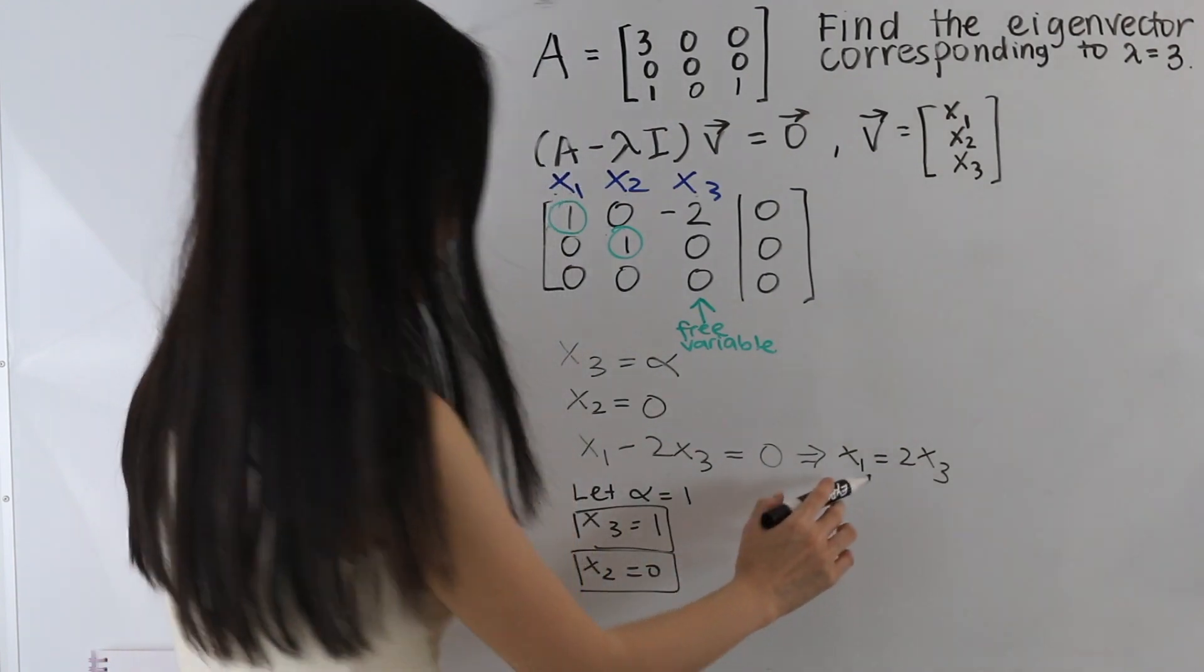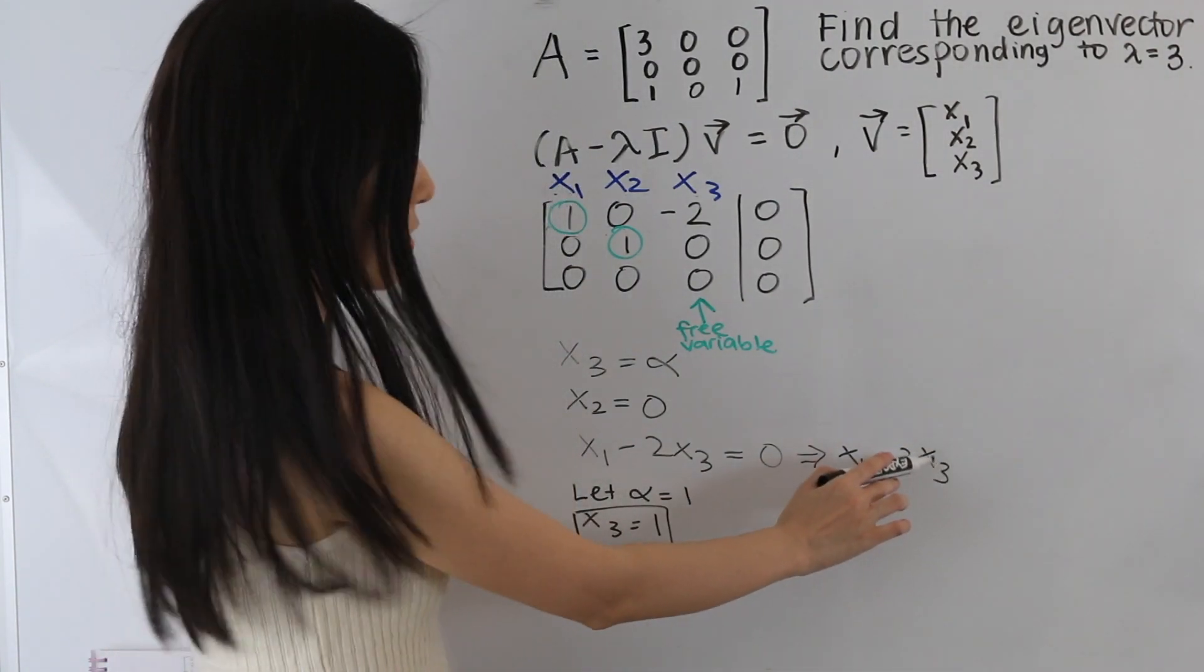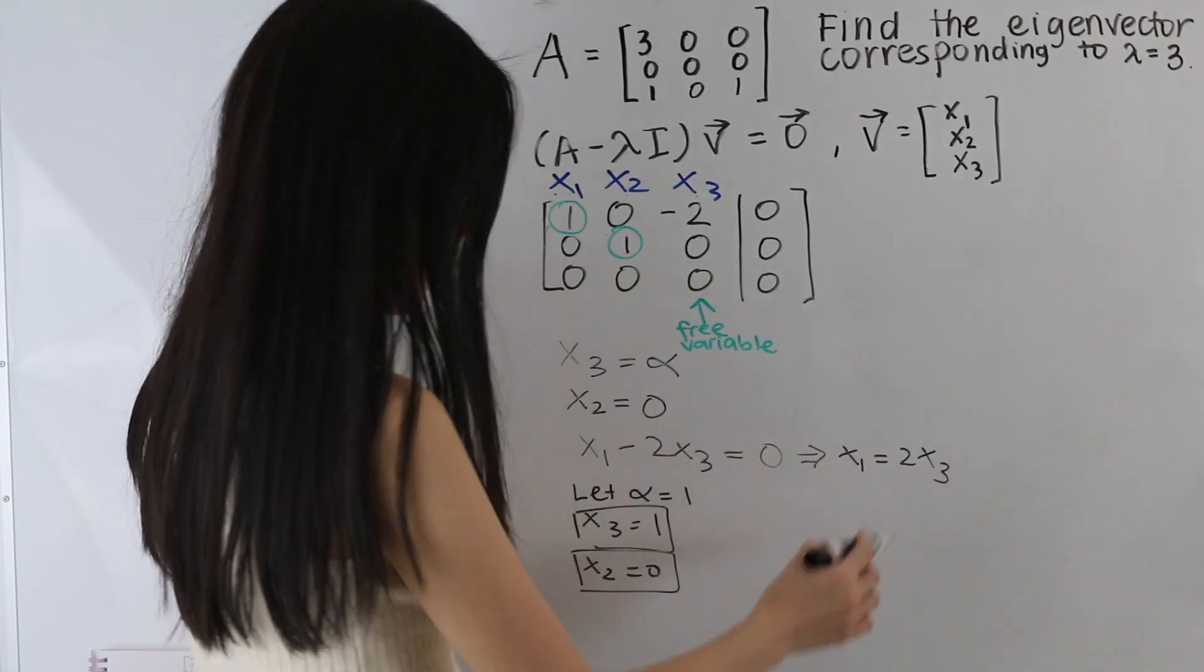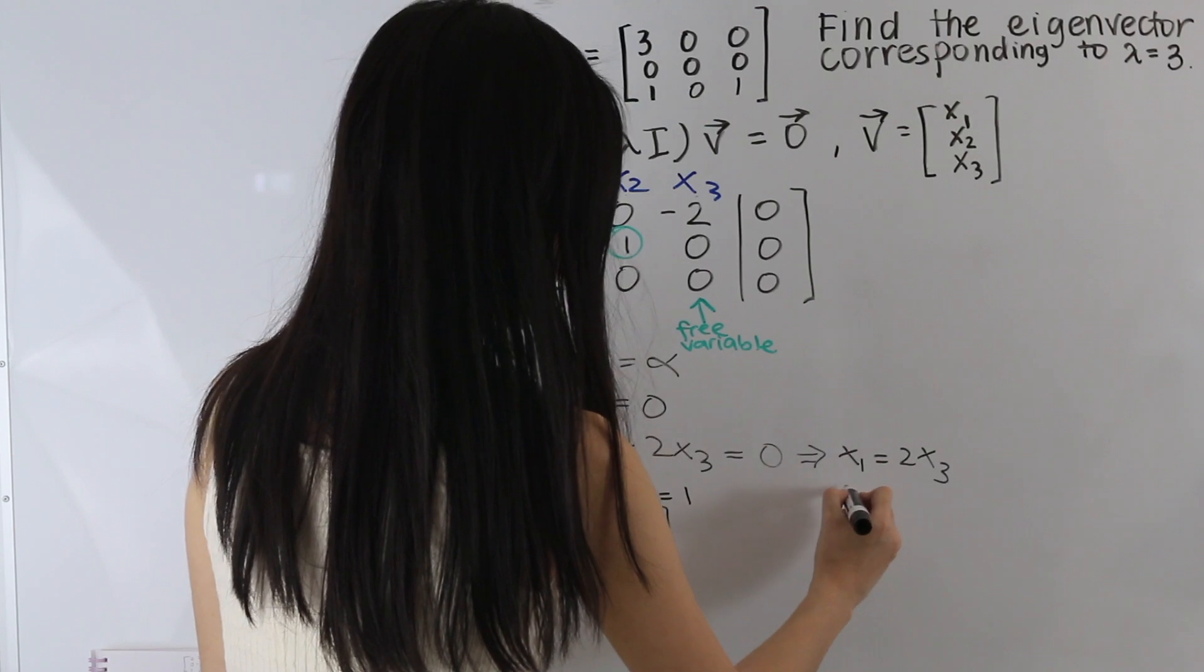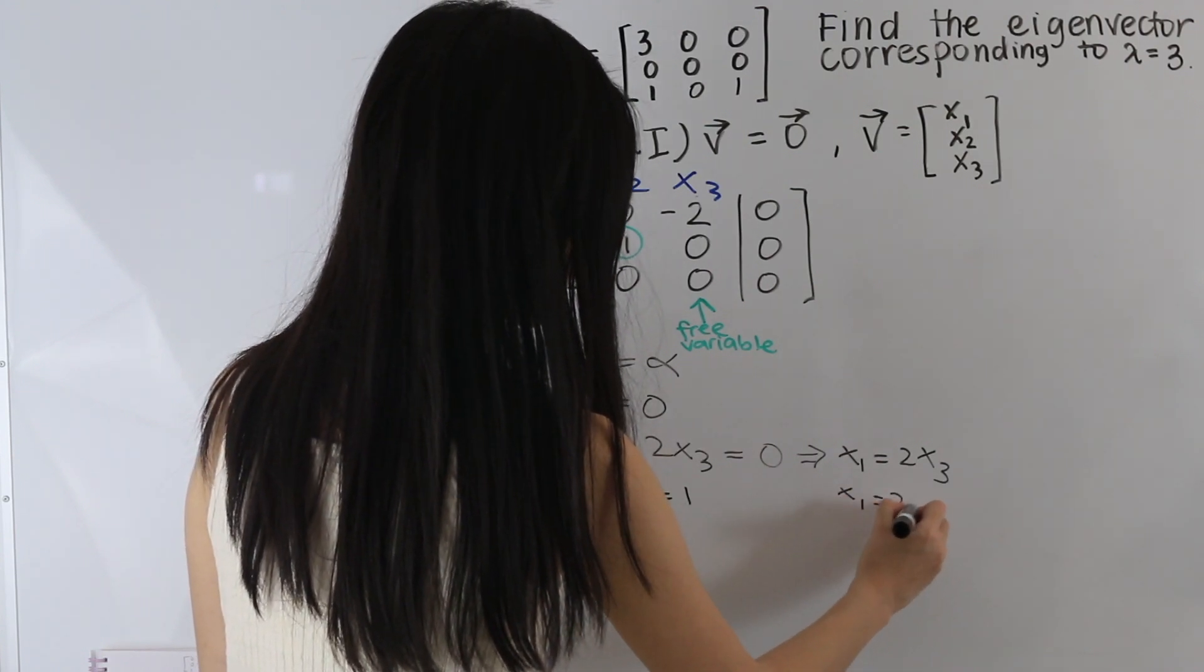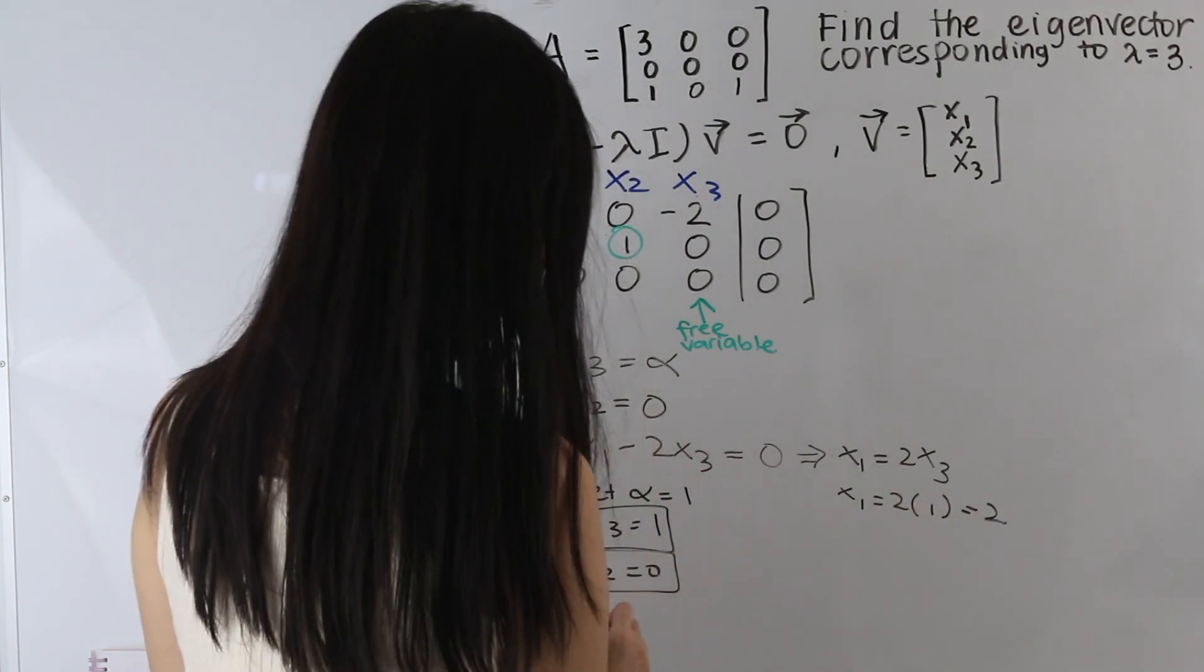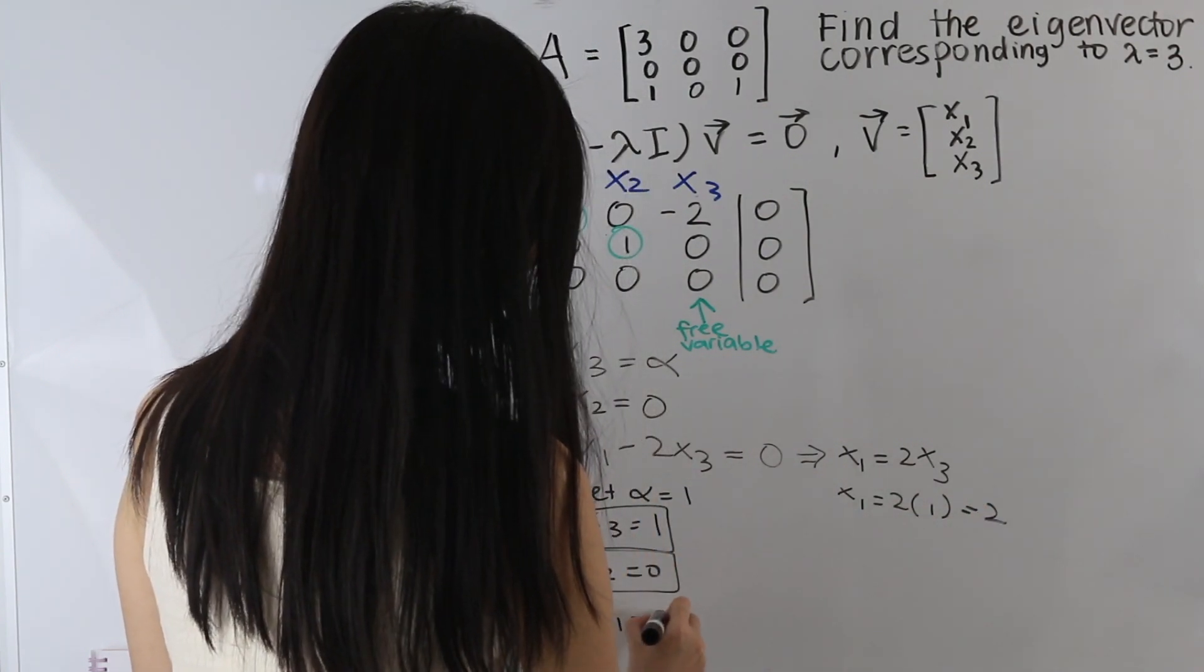And we have x1 equal to 2x3. So let's go ahead and plug in our value for x3 into here. So that gives us x1 is equal to 2 times 1, which is 2. So we have x1 is equal to 2.